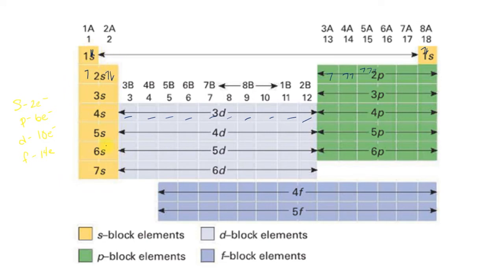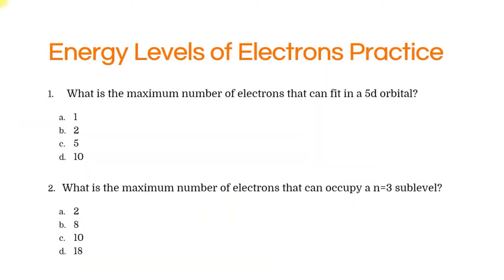This is the s block where the period matches the energy level. This is the p block where the period also matches the energy level. The d block is one less — the energy level is one less than the period, so the 3d energy level happens in the fourth period; those transition metals are all 3d elements. The f block is minus two from the period to find the energy level — so 4f belongs in the sixth period.